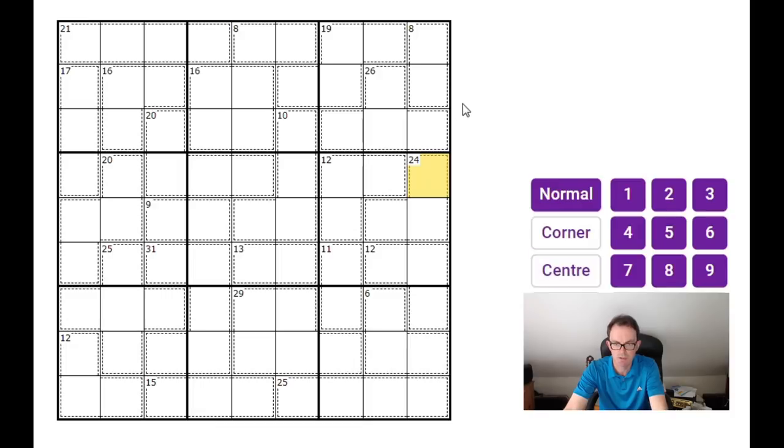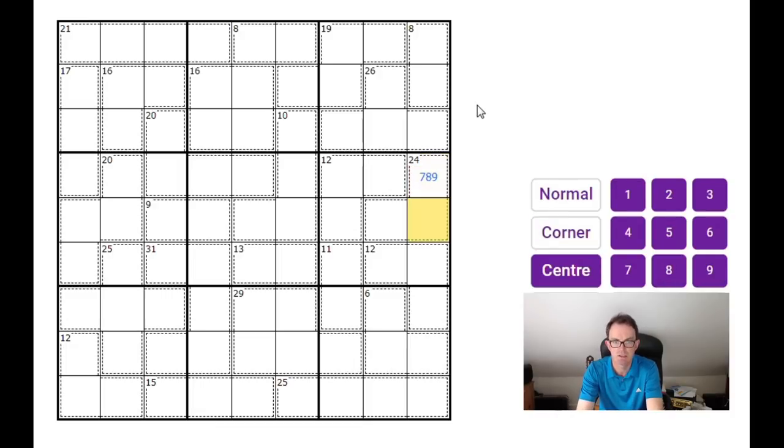24 in 3 cells, that's 7, 8, 9, so put that in. 6 in 3 cells is 1, 2, and 3. 10 in 4 cells is 1, 2, 3, and 4. Just checking whether I can see anything else. No.